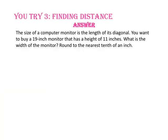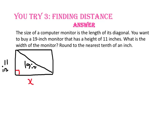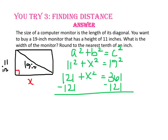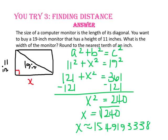Pause the video and do you try number 3. The size of a computer monitor is the length of its diagonal. You want to buy a 19-inch monitor that has a height of 11 inches. What is the width of the monitor? Round to the nearest tenth of an inch. Let's start with the Pythagorean Theorem: a squared plus b squared equals c squared. Since 11 and x are the lengths of the legs, let's substitute those in for a and b. Since 19 is the length of the hypotenuse, we'll substitute that for c. 11 squared is 121 and 19 squared is 361. Subtract 121 from both sides and x squared equals 240. Take the square root of both sides; x equals the square root of 240. Rounding to the nearest tenth of an inch, since 4 is in the tenths place, we use the 9 to round the 4 up to a 5. The computer monitor is approximately 15.5 inches wide.